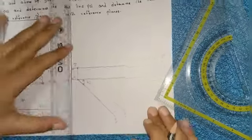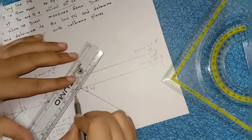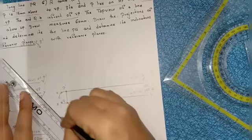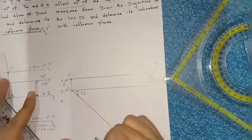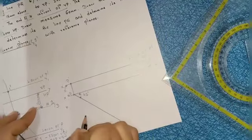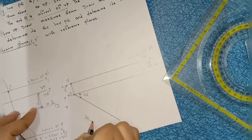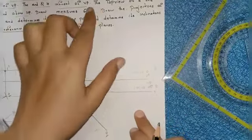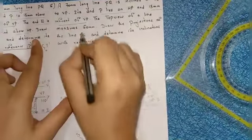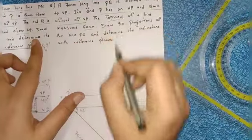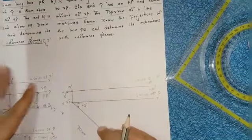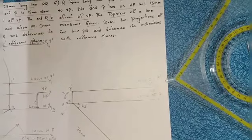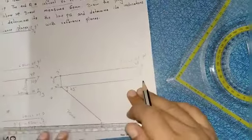Mark the dimensions: draw the extension line, draw the dimensional line with closed and filled arrow marks. Write down this distance is 70mm. In this question they also mention the top view — the top view of the line measures 60mm. The top view is drawn below the reference line, and it is 60mm. You have already marked point Q.